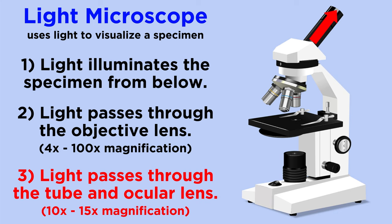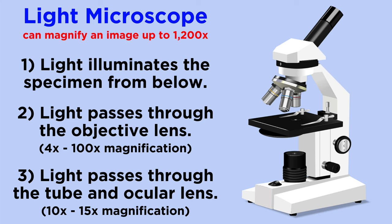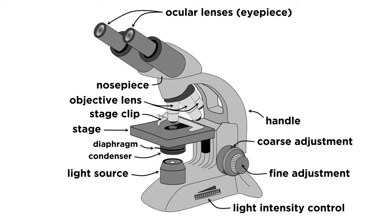Next, the light travels through the tube of the microscope and the eyepiece, which further magnifies the image by a factor of ten or fifteen, before it finally enters your eye. Some light microscopes can magnify an image up to twelve hundred times its original size.